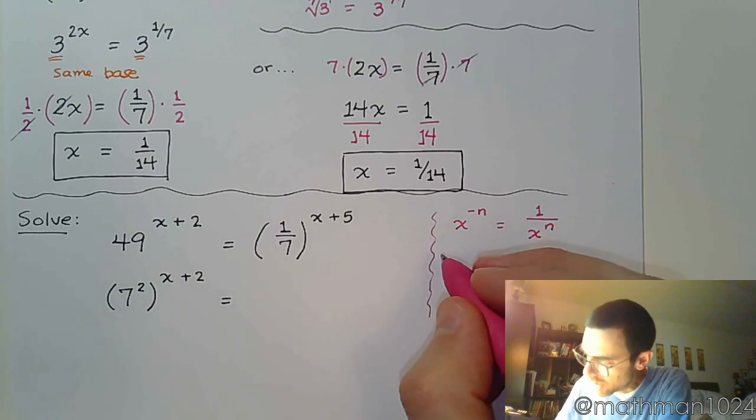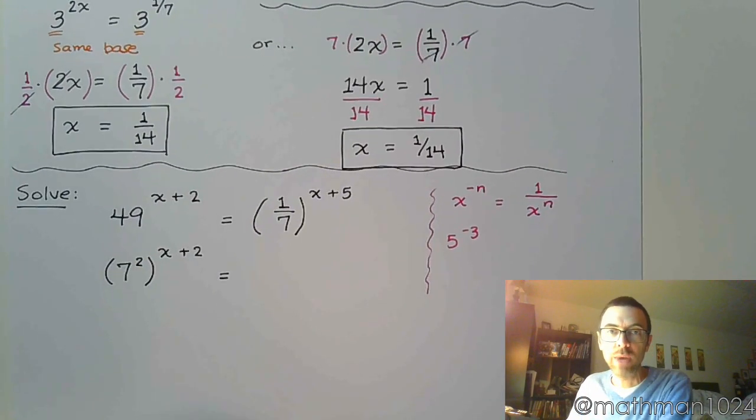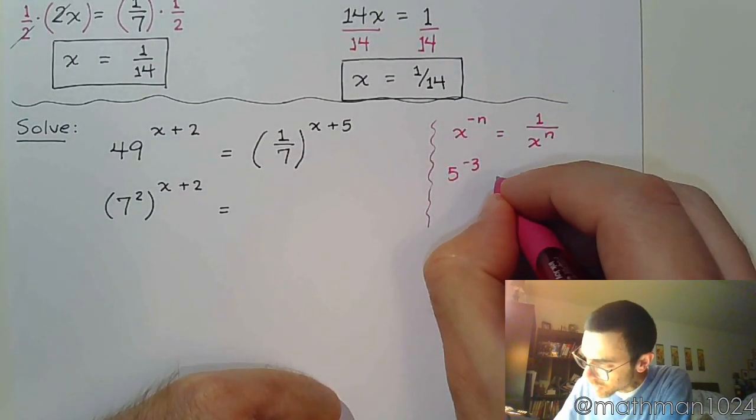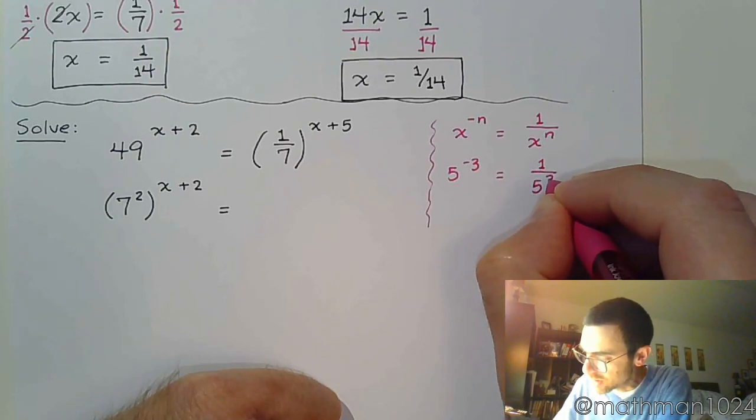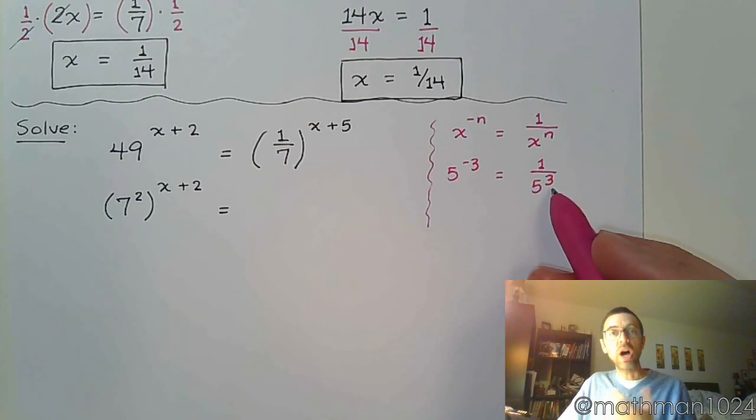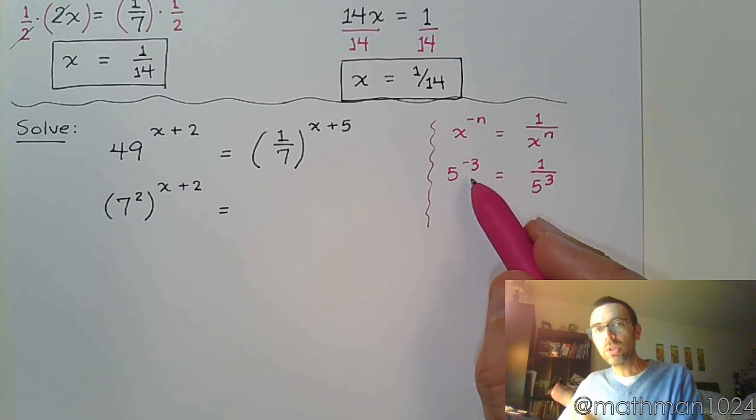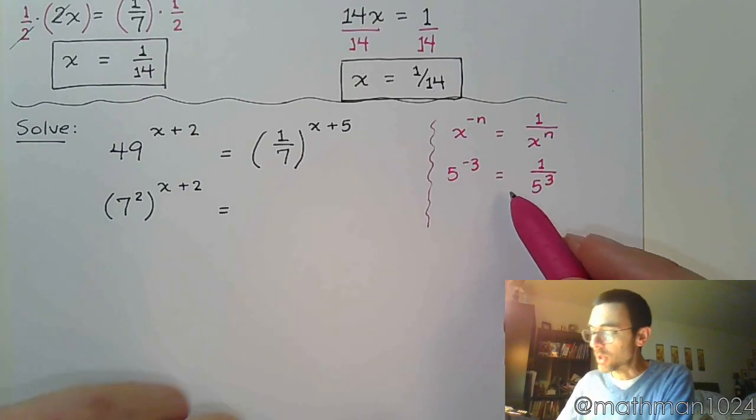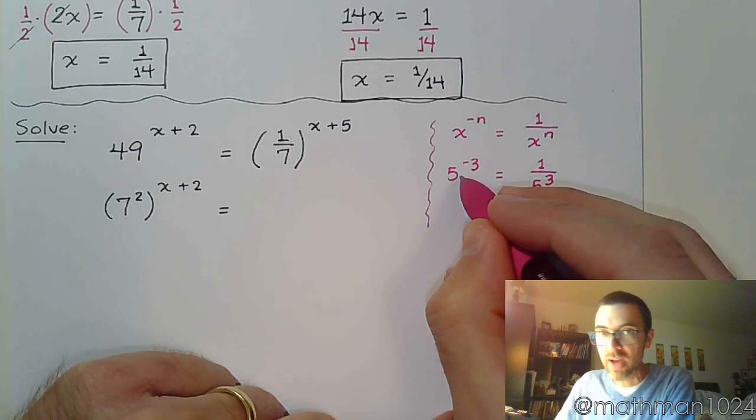So that means if I wrote 5 to the negative 3rd power, for example, we would first rewrite this as 1 over 5 to the 3rd. Well, going from a negative to a non-negative power is as simple as doing the reciprocal. But you can also go backwards because we have an equation here. So if you have 1 over 5 to the 3rd, you can rewrite that as 5 to the negative 3rd.